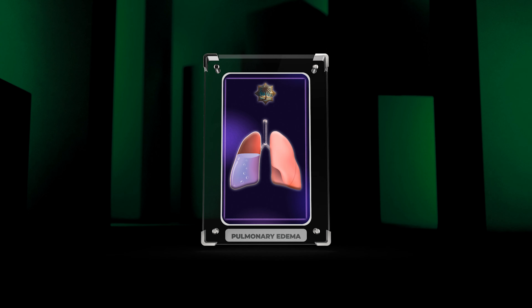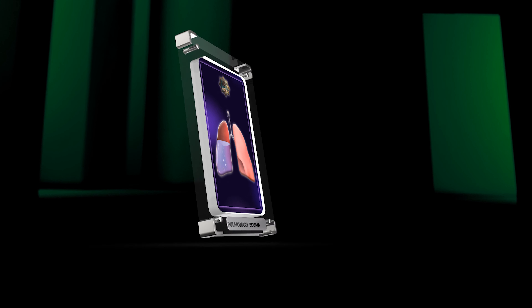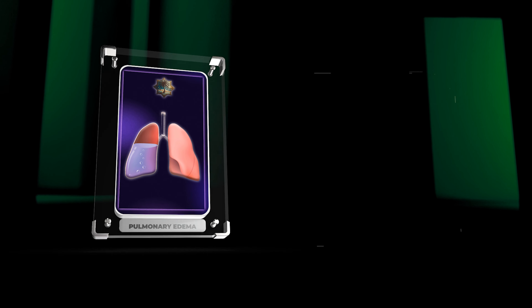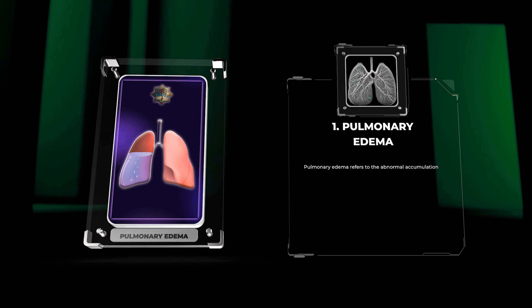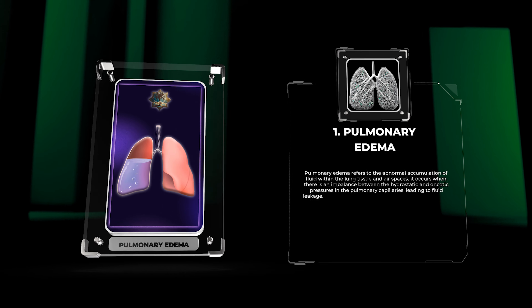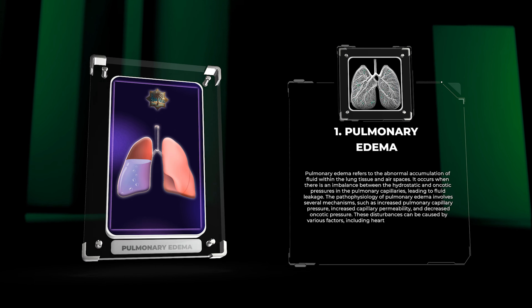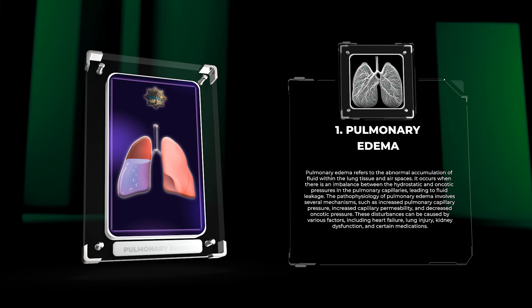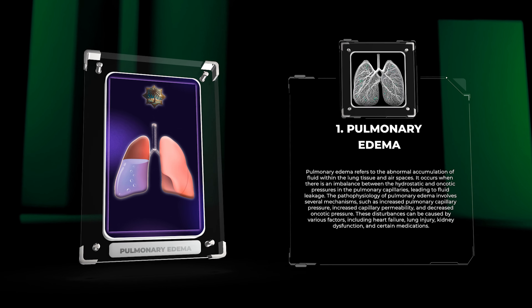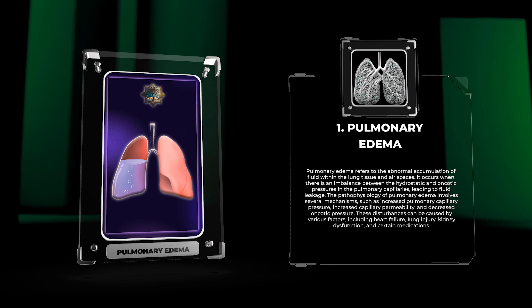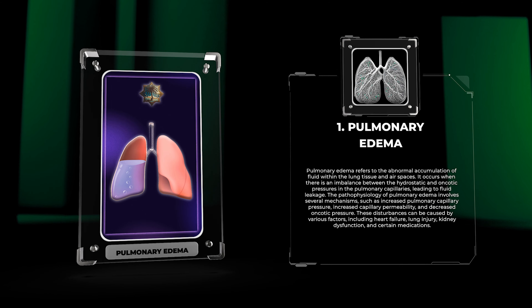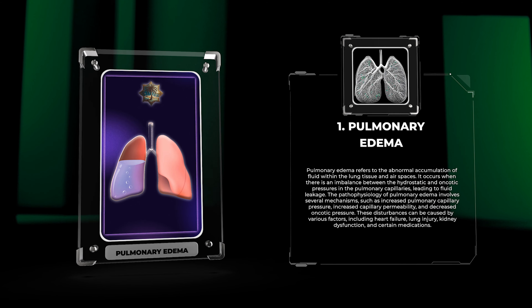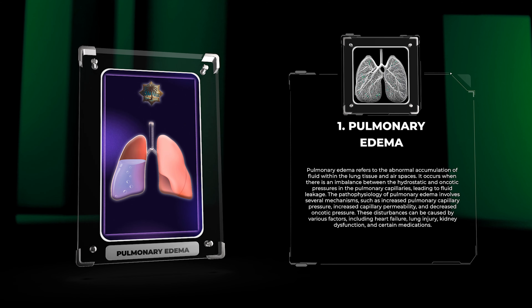Pulmonary edema refers to the abnormal accumulation of fluid within the lung tissue and air spaces. It occurs when there is an imbalance between the hydrostatic and oncotic pressures in the pulmonary capillaries, leading to fluid leakage.